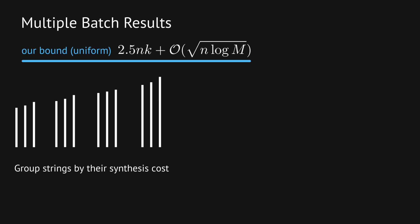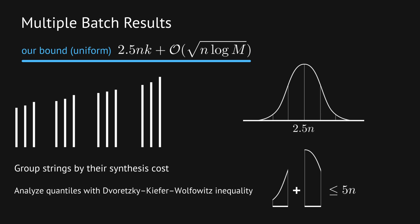Let me briefly describe the analysis. Consider the cost quantiles for each of the batches. We can imagine pairing up a low cost and a high cost batch. If we look at the cost quantiles, we see that the sum of the costs of the two batches is about 5 times n. This is because we save a bit for the cheap batch and this balances out the more expensive one. Formally, we can analyze the empirical cost quantiles with the DKW inequality.